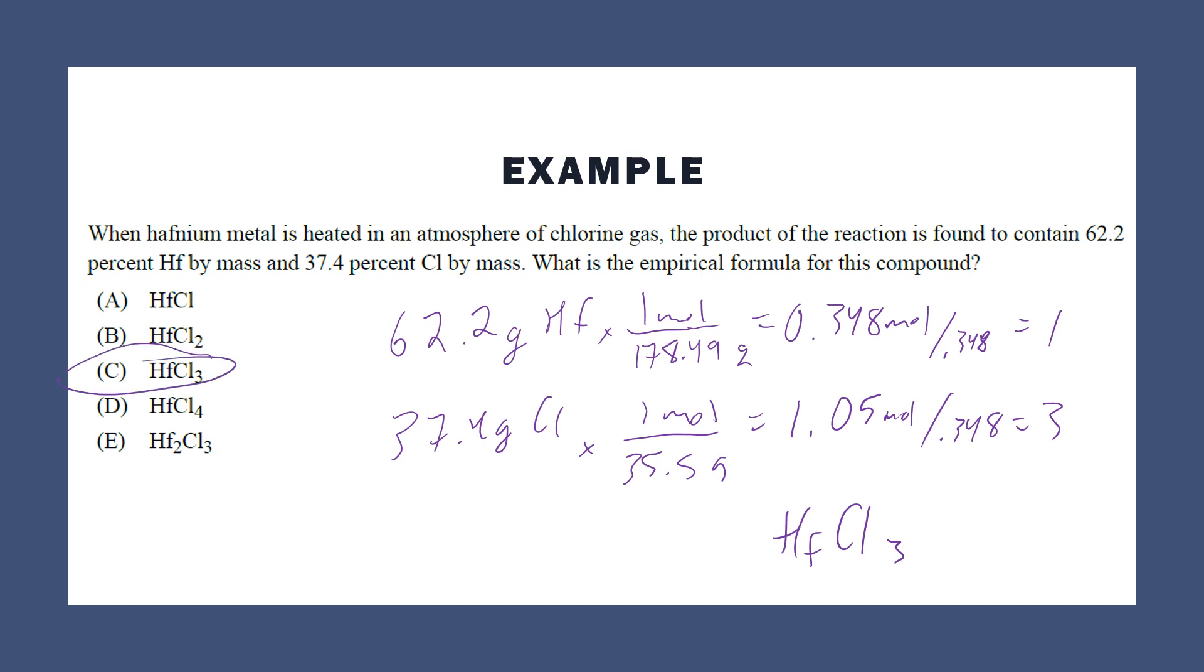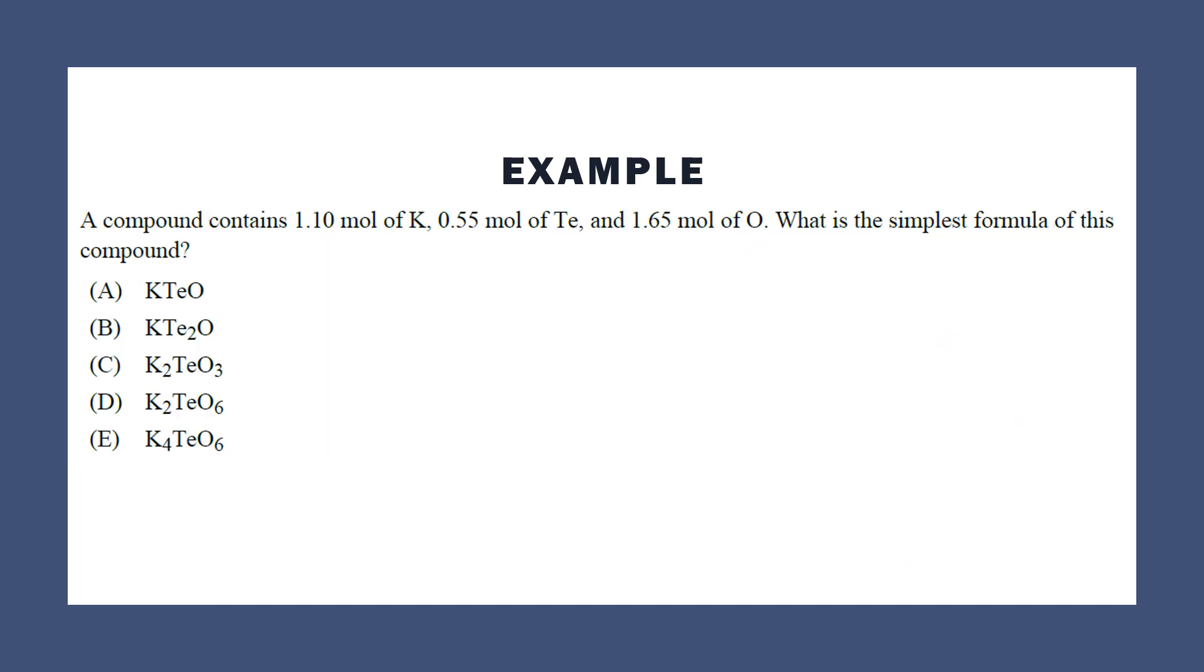Another approach would be to just find the mass percent for each of these options and see which one fits. So if you don't remember how to do empirical formula, although you should, you can just do the mass percent based on the molar masses and check your answers that way. Here's another example of an empirical formula question, but this one they already give you moles, which is great. So all you need to do is divide by the smallest one, which is 0.55. And I get 1 for the tellurium, 2 for the potassium, and 3 for the oxygen, so K₂TeO₃. Very straightforward question.